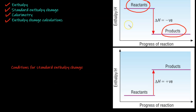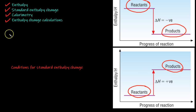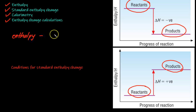In endothermic reactions, heat is absorbed from the surroundings because the bonds in the reactants are stronger than the bonds in the products. The internal energy stored in the reactants is known as its enthalpy, denoted by the letter H.